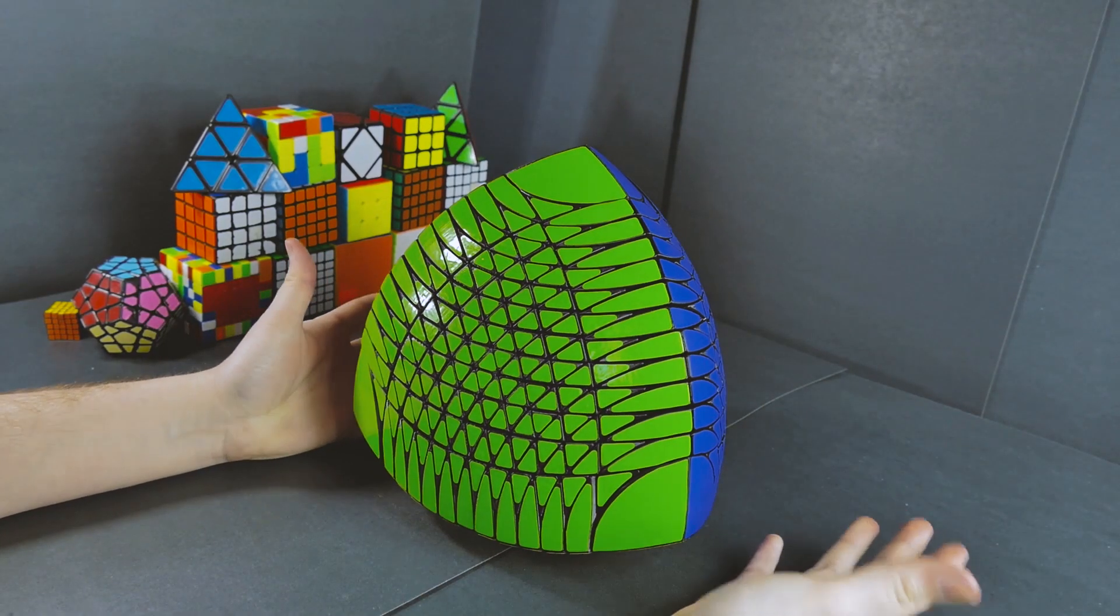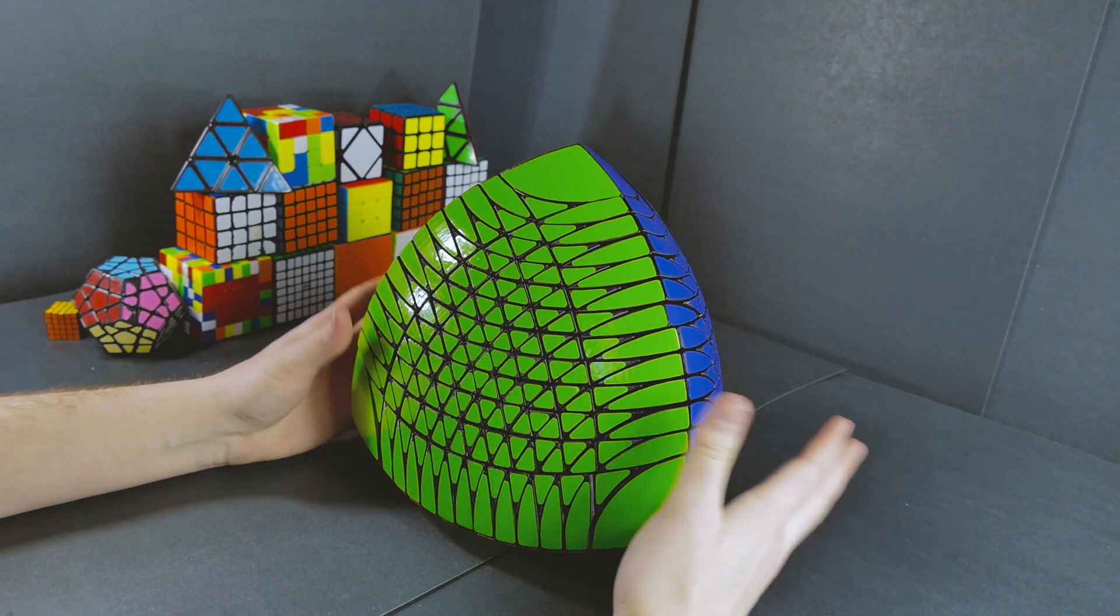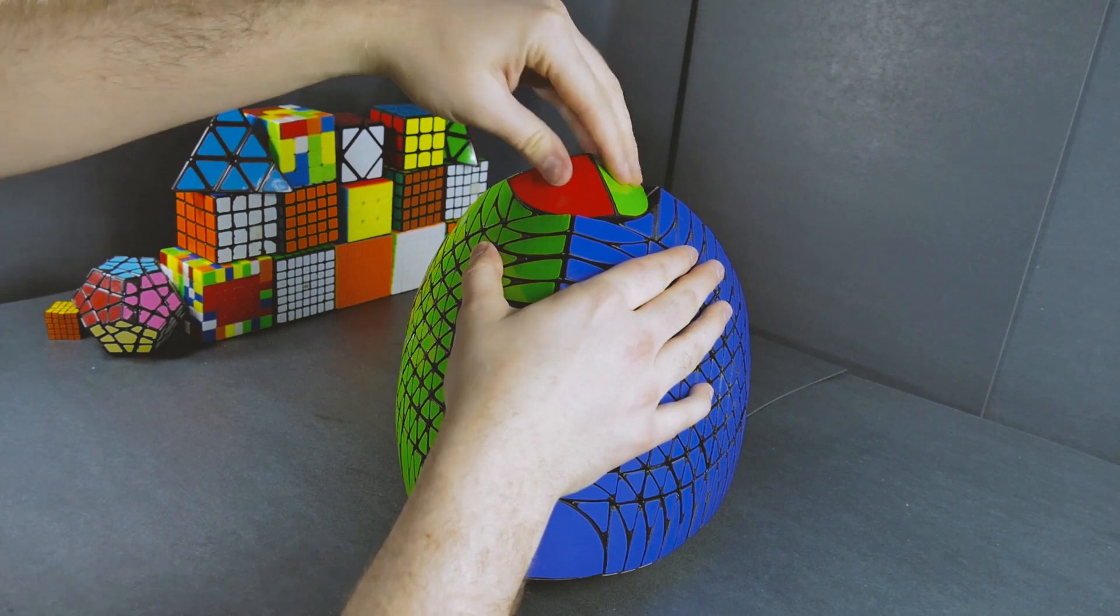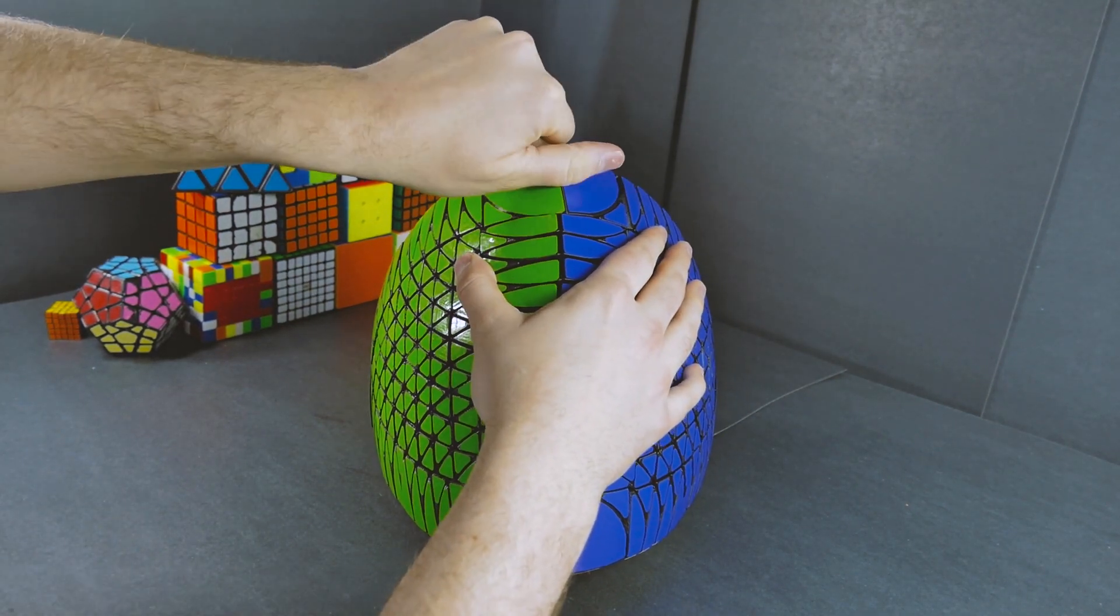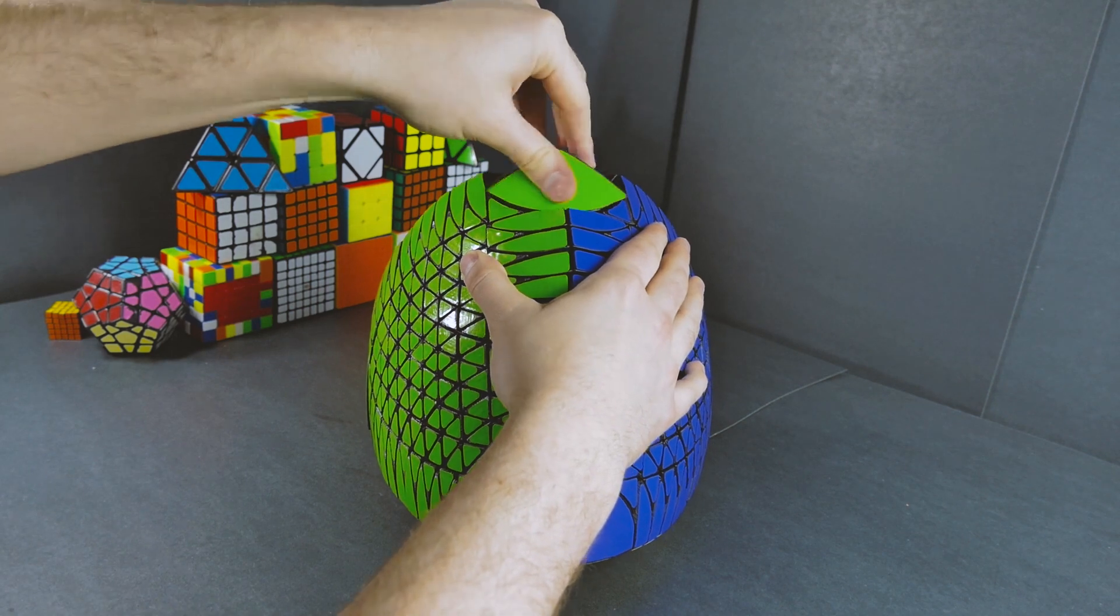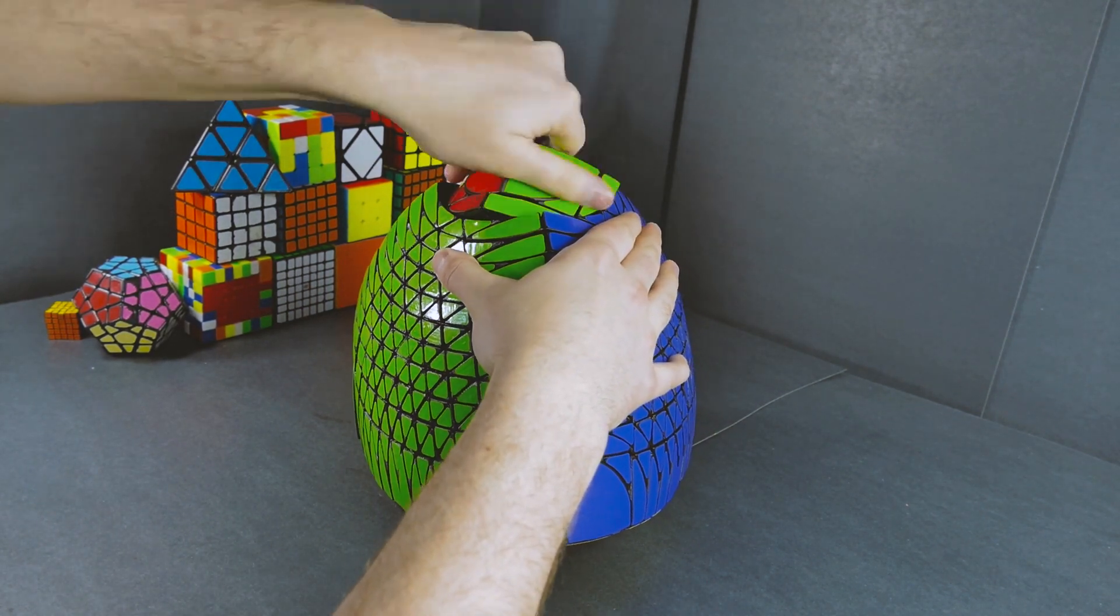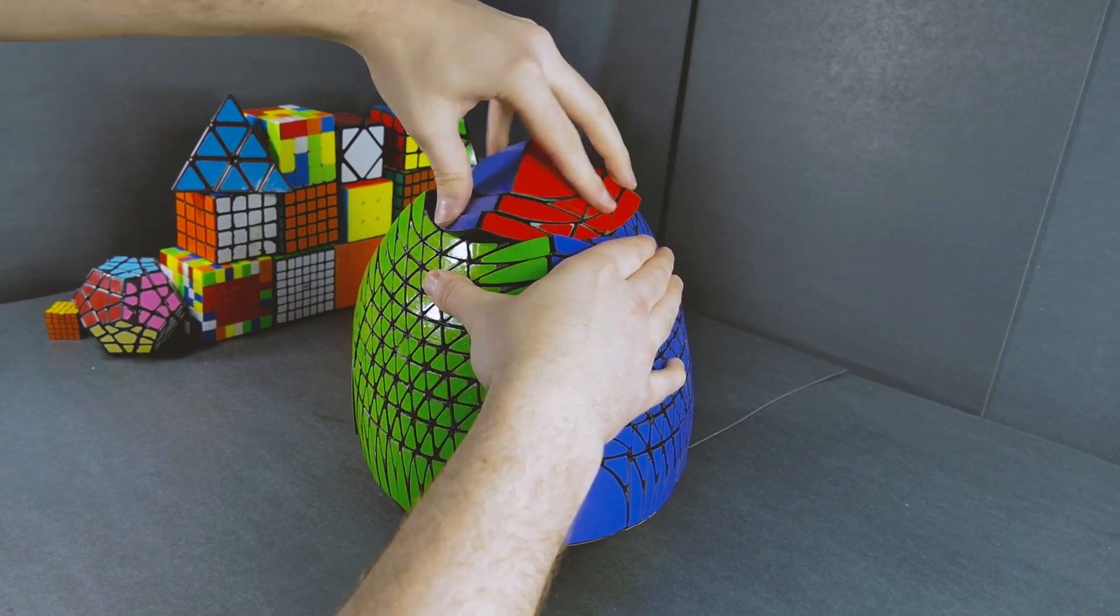So unfortunately, like a lot of Pyraminxes, things are pretty good at the top and get progressively worse as you go down. This Pyraminx is no exception. Trivial tips turn just fine, and I'd be in serious trouble if they didn't, because these are kind of hard to mess up. But the first few layers are actually pretty smooth.